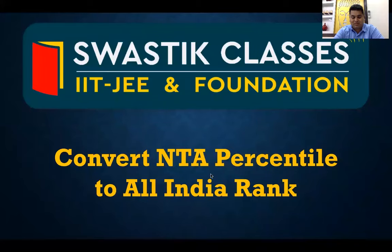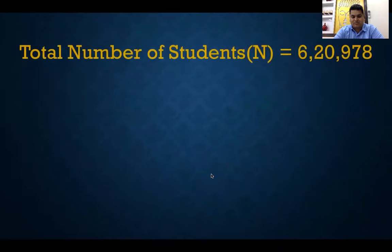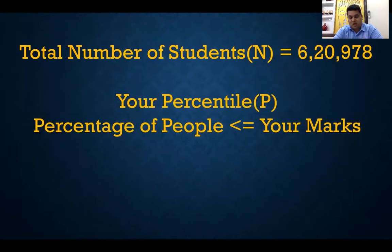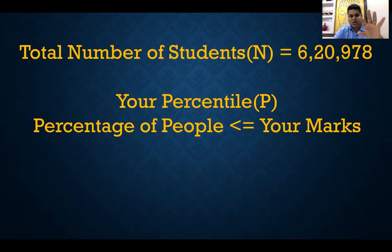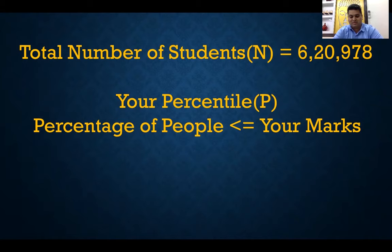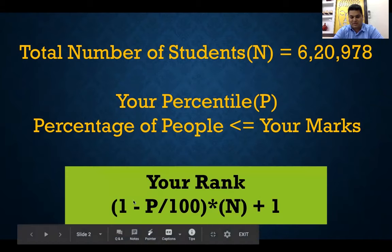The formula is fairly straightforward. What you need is the total number of students who appeared for the exam. You have your percentile for physics, chemistry, maths, and total. Percentile is simply the percentage of people who have less than or equal to your marks. So the formula is: 1 minus P divided by 100, where P is your percentile, multiplied by N.